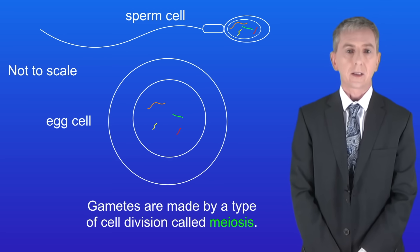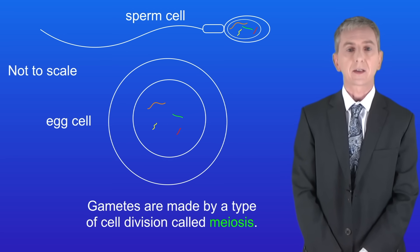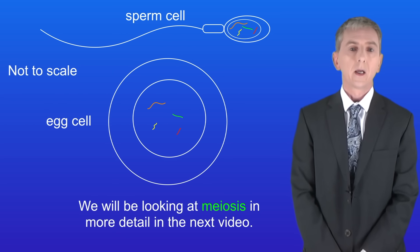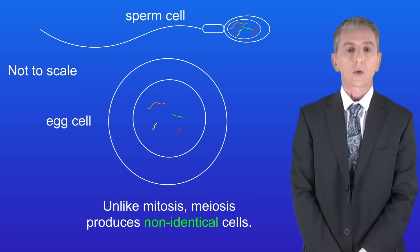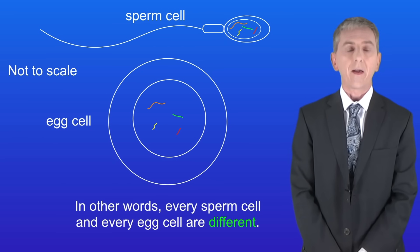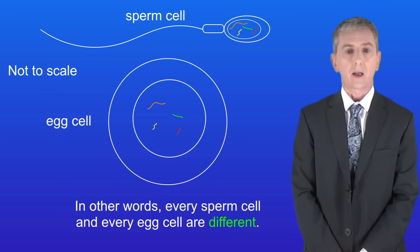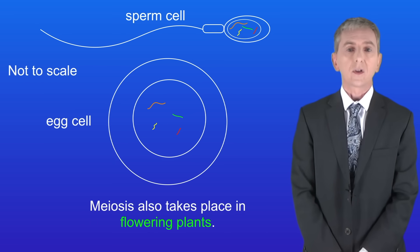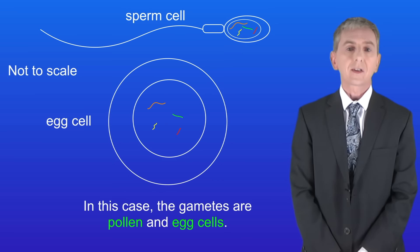A key factor you need to learn is that gametes are made by a type of cell division called meiosis. We'll be looking at meiosis in more detail in the next video. Unlike mitosis, meiosis produces non-identical cells — in other words every sperm cell and every egg cell are different. Meiosis also takes place in flowering plants; in this case the gametes are pollen and egg cells.